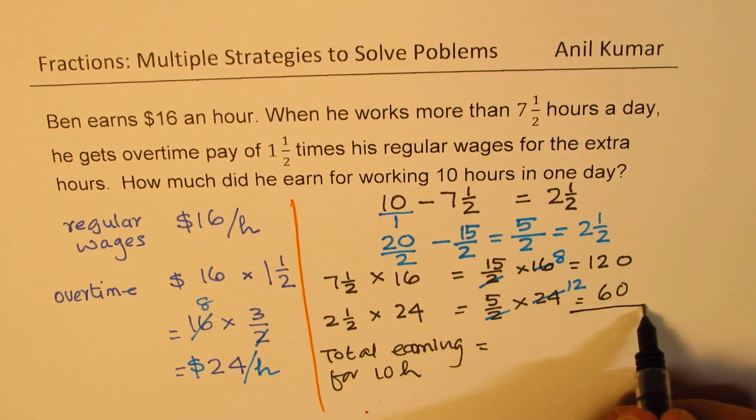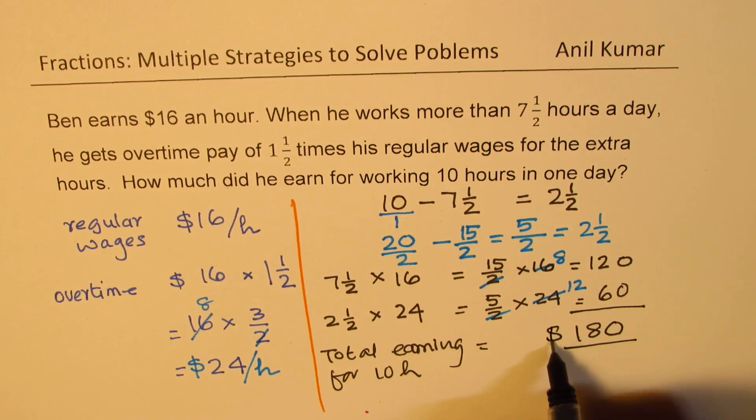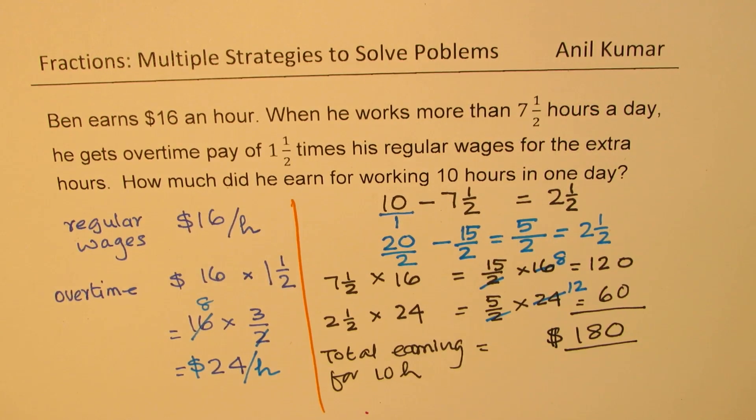So the total earning for 10 hours is how much? We have to add this. So when you add, you get $180. Is that clear to you? So that is how we can get the net amount.